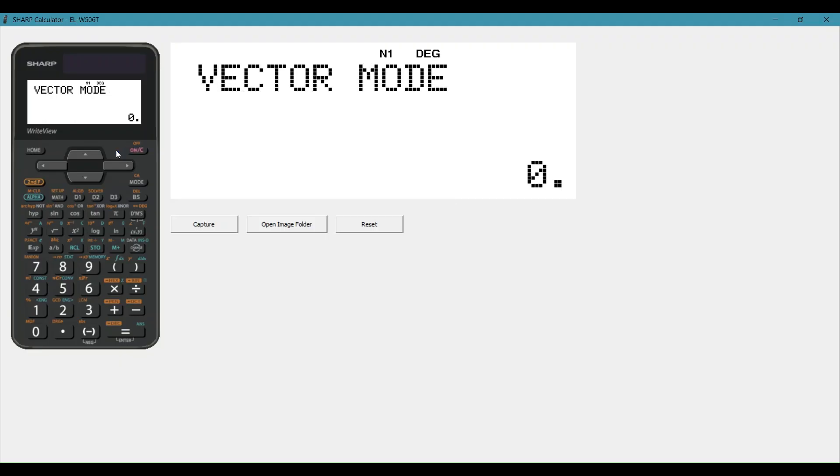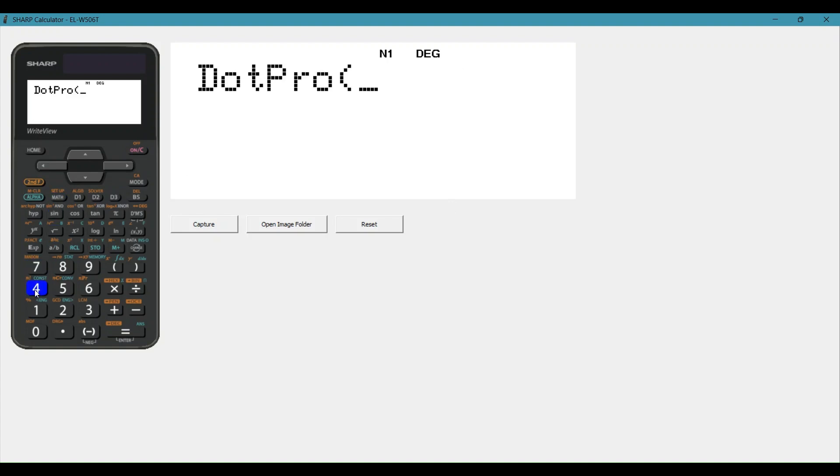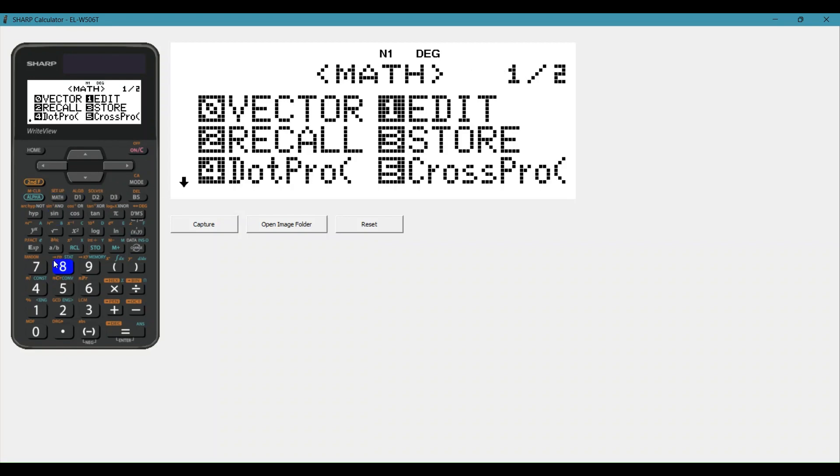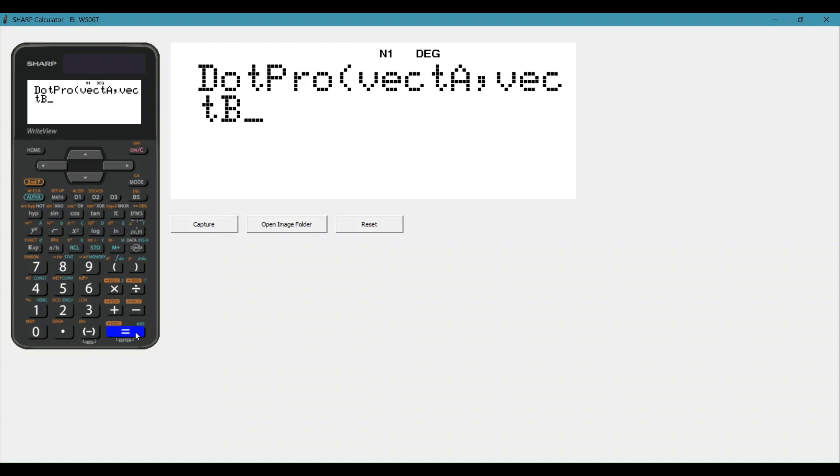Let's find the dot product. We're going to say math, and we're going to choose 4 for dot product. Now we need two vectors, so we'll say d1 for vector A, this button here, that x comma y in brackets button creates your coordinate pair, math, and zero for vector, one for vector B, and equals, and we get 42.